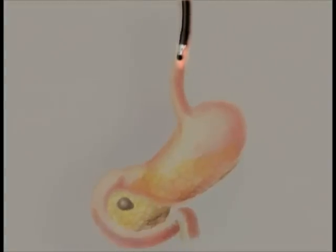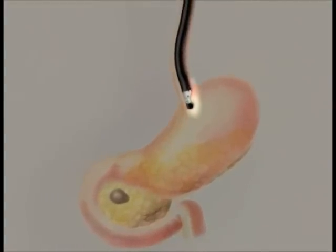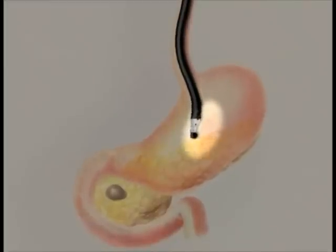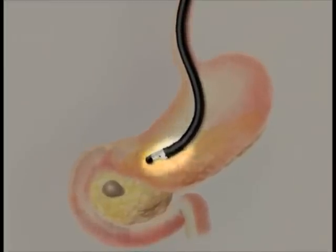The endoscope used is a slim, bendable tube with an ultrasound probe at the end. It enters through the mouth and travels down the esophagus and into the stomach.